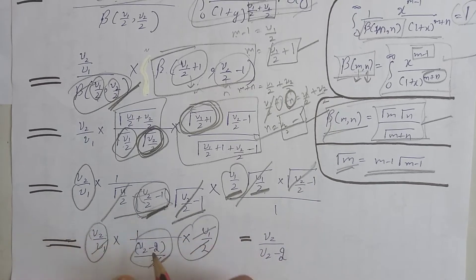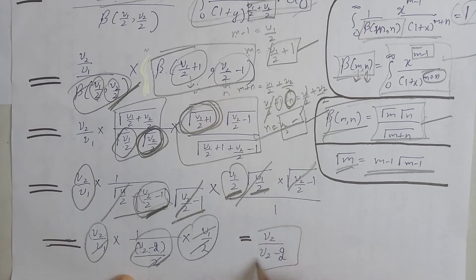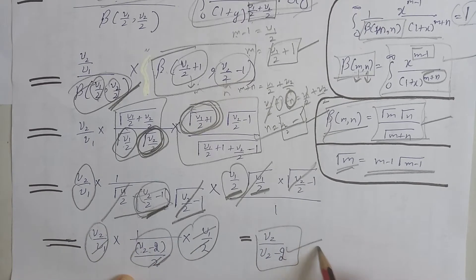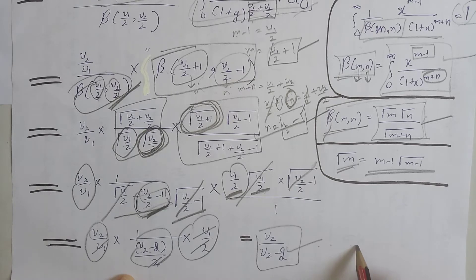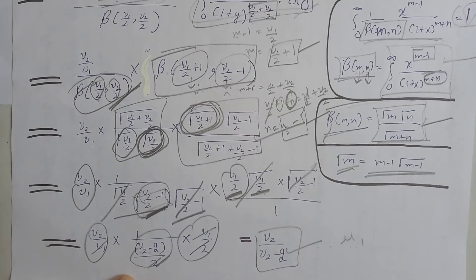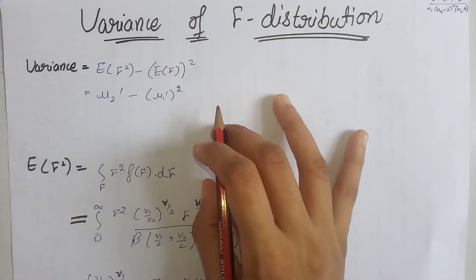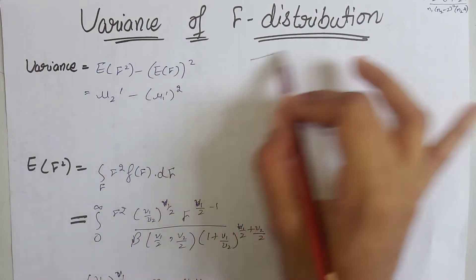We are left with ν₂ divided by (ν₂ minus ν₂), which simplifies to ν₂/(ν₂ − 2). This is the mean of the F-distribution, that is the first moment about origin, mu₁ dash. Now we will calculate the variance of the F-distribution.